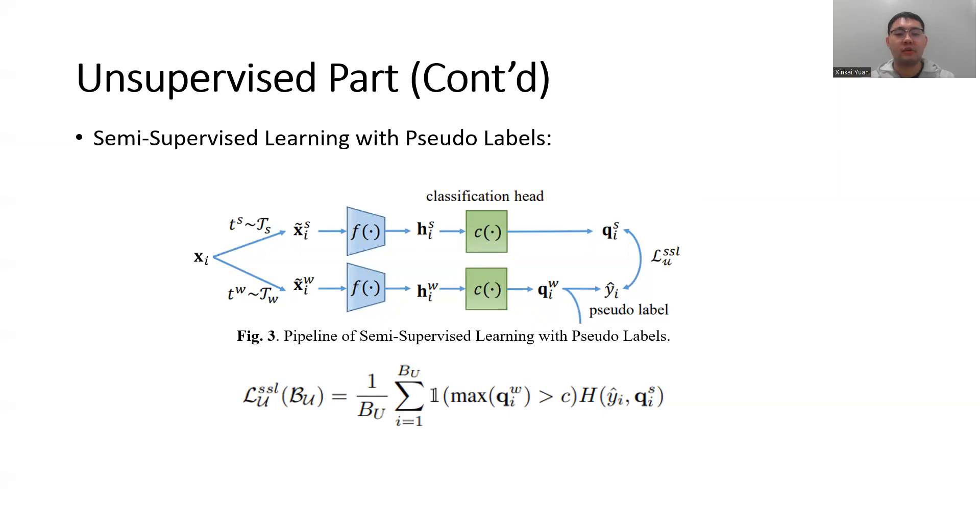Each augmentation goes through the network backbone and a classification head to generate the corresponding logit q. q_iW here is the logit of the weakly augmented image, which is basically the probability of xi being a sample of each class.